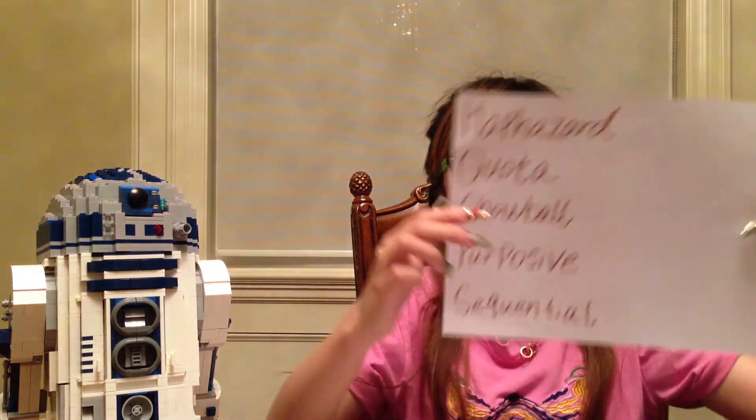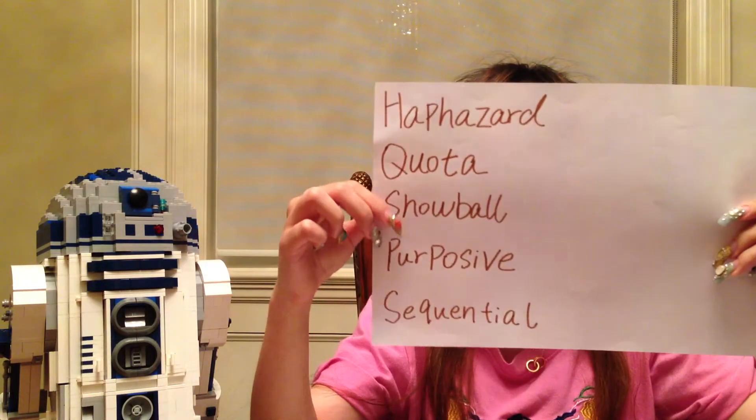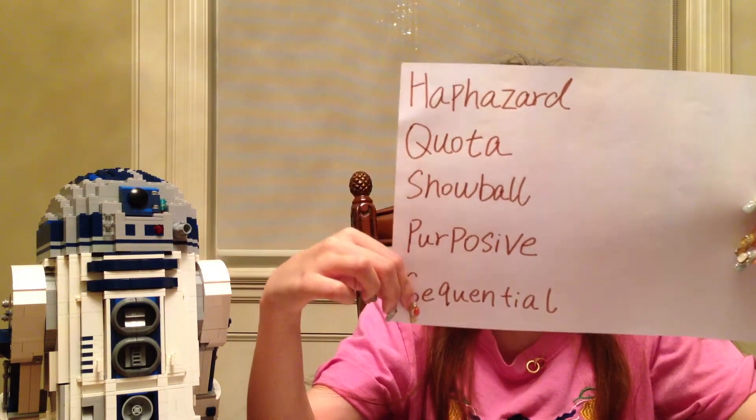Non-probability sampling is also called non-random sampling and convenience sampling. There are five types of non-probability sampling: haphazard sampling, quota sampling, snowball sampling, purposive sampling, and sequential sampling.